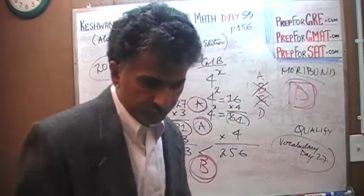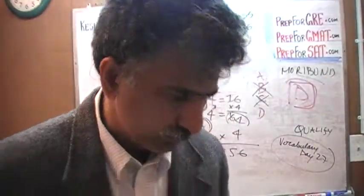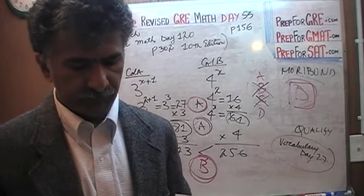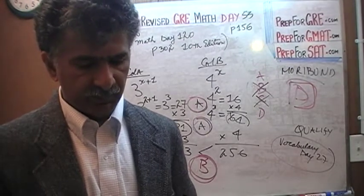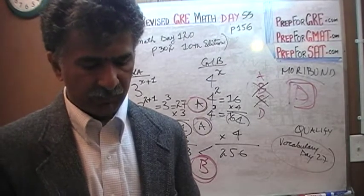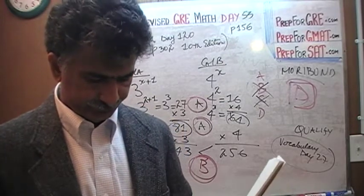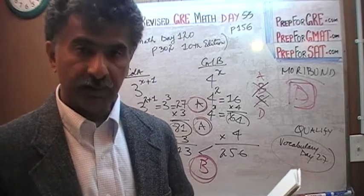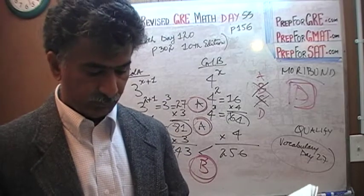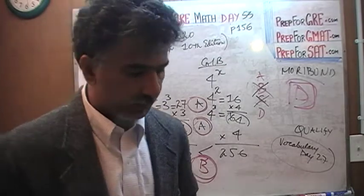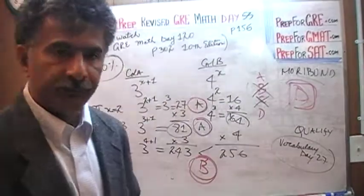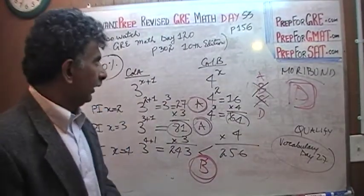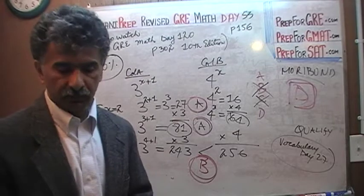I'm not sure if I covered the word 'moribund' in my vocabulary videos — we'll soon find out. Moribund means something that is dying or about to be dead. I haven't covered it yet, but I'll make sure to include it in future vocabulary videos. I'll see you tomorrow on day number 54.